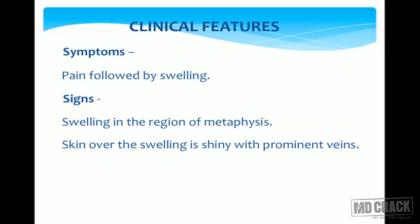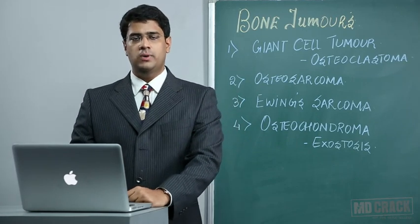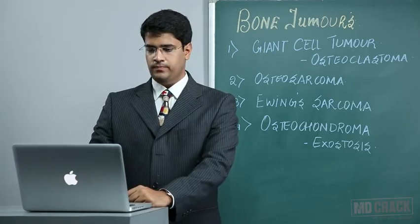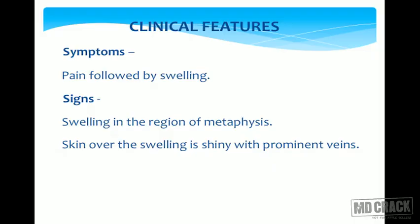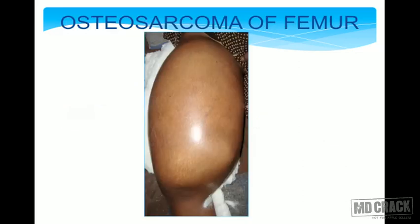Clinical features of osteosarcoma: symptoms include pain followed by swelling. Signs include swelling in the region of the metaphysis — osteosarcoma commonly affects the metaphysial region, which is a classical MCQ point. The skin over the swelling is very shiny and tense, with classically prominent veins. The swelling is warm and tender with signs of inflammation and ill-defined margins. This is an excellent clinical picture of osteosarcoma of the femur showing a huge swelling in a young patient with tense shiny skin and prominent veins.